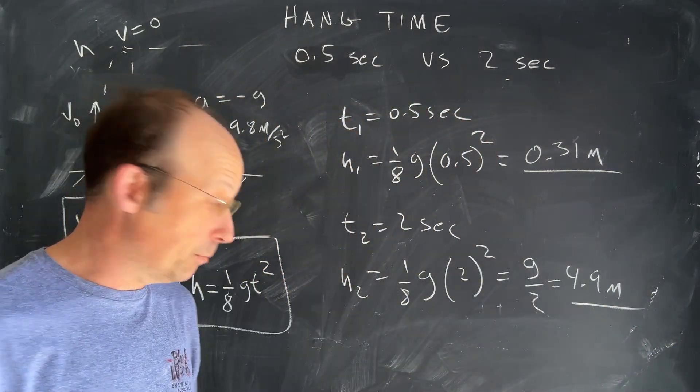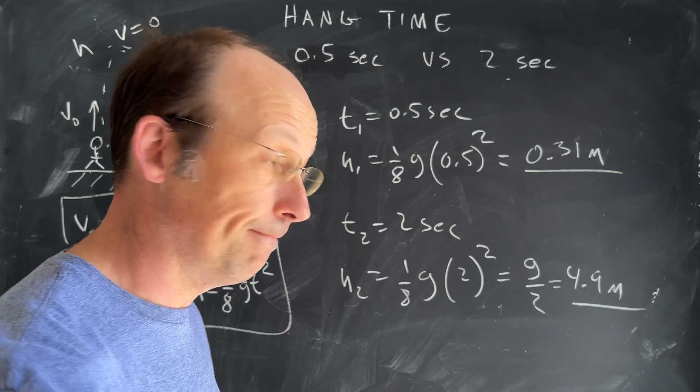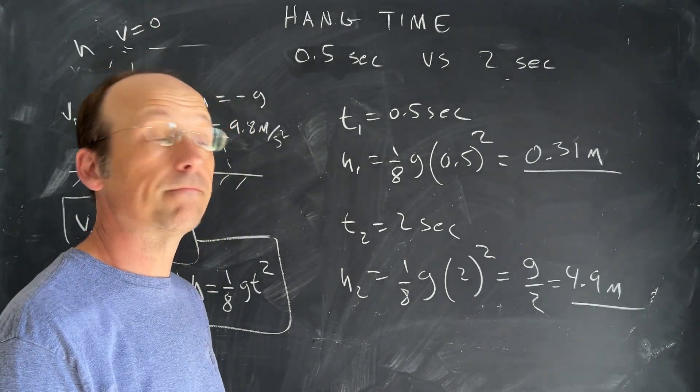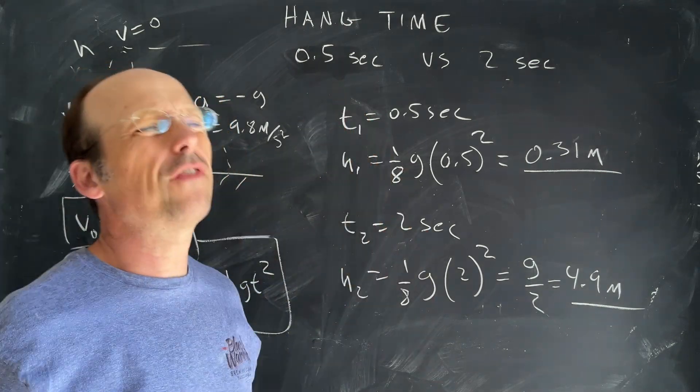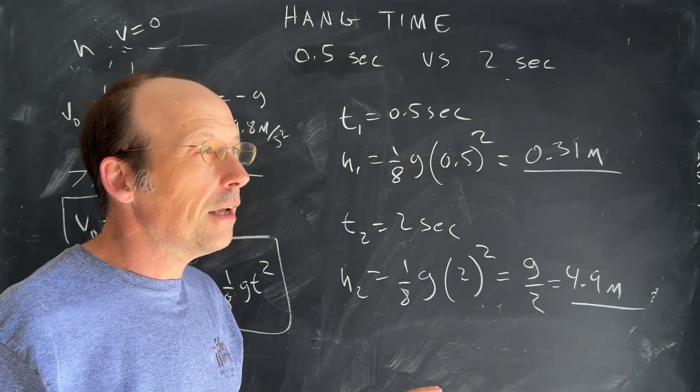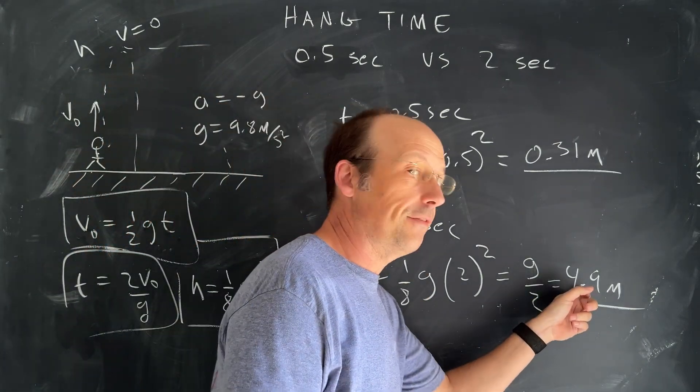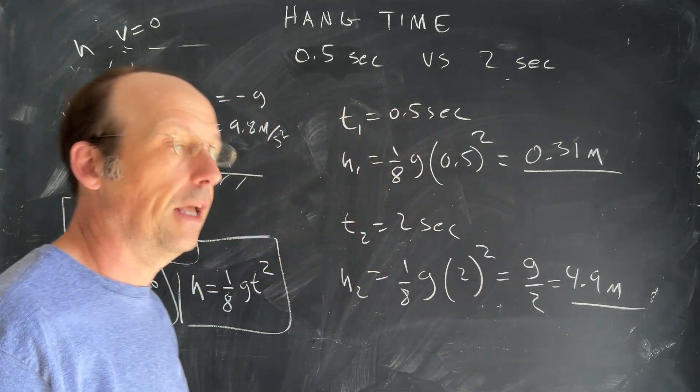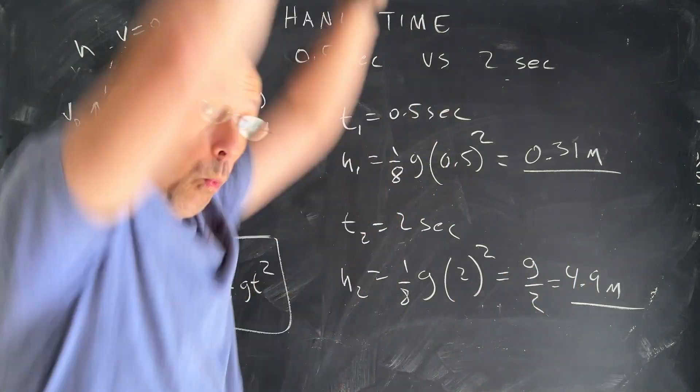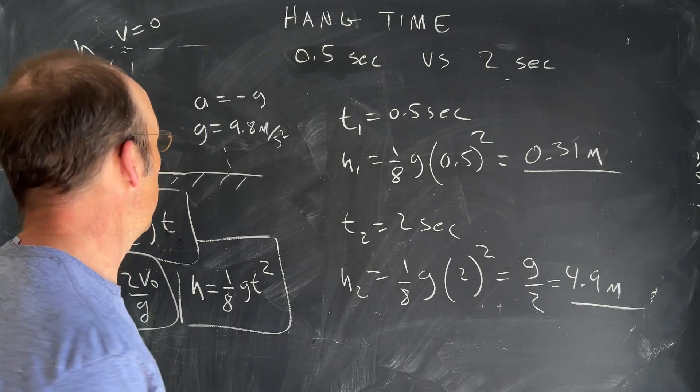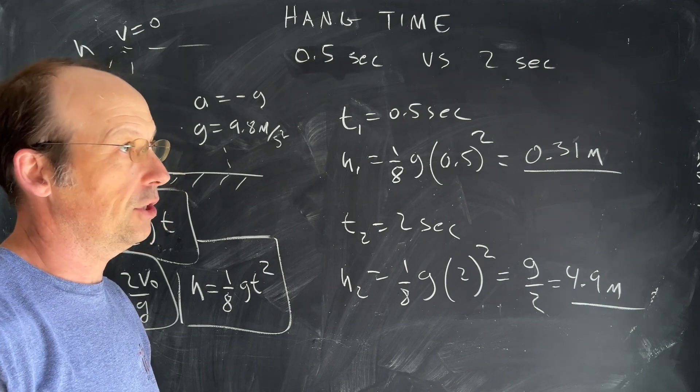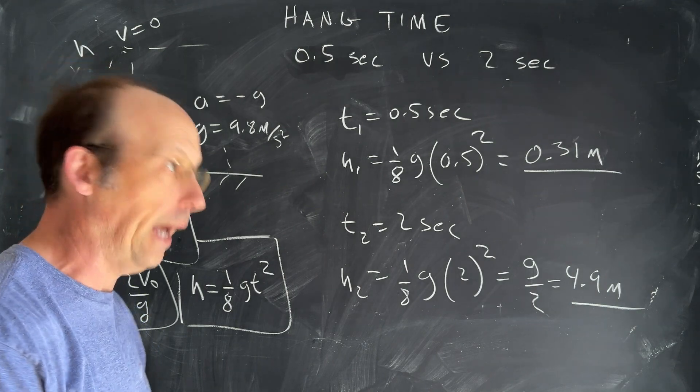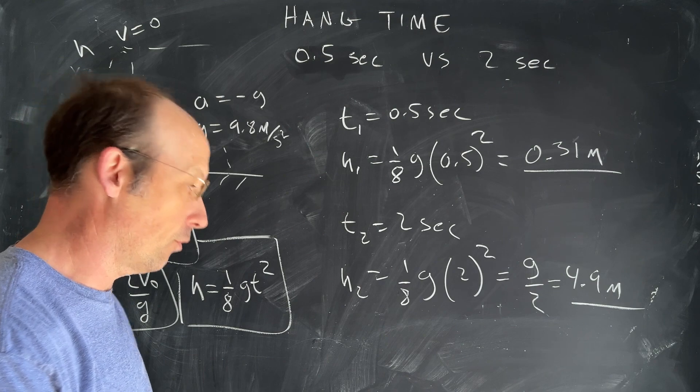Is that a reasonable number for jumping? So maybe we could convert that to feet. I mean, just roughly three feet per meter, roughly. So five times three, that's 15 feet, 15 feet high. That's not going to happen. So you can't have a hang time of two seconds. It's just not gonna happen for humans.